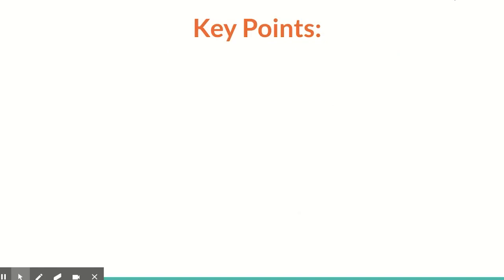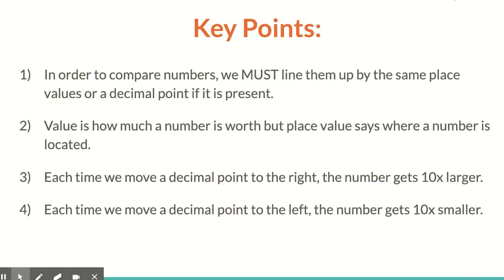A few key points — the most essential things to remember during this lesson. One, in order to compare numbers, we must line them up by the same place values, or if their decimal point is present, that's what we use. Two, value is how much a number is worth, but place value is where a number is located. Three, each time we move a decimal point to the right, the number gets 10 times larger. And conversely, each time we move a decimal point to the left, the number gets 10 times smaller.